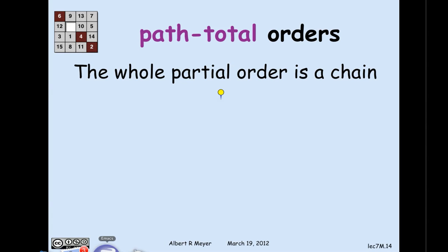Another way to say path total is that the whole order looks like a chain: given a finite set of elements, there's a biggest one, then the next biggest, and so on. The basic example of path total is numerical ordering by greater-than. A basic example of something typically not path total would be subset containment, where you can perfectly well have two sets, neither of which is contained in the other.